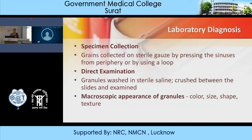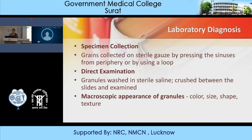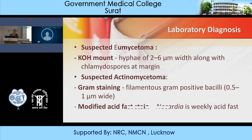For laboratory diagnosis, specimen collection involves collecting grains on a sterile gauze piece by pressing the sinuses from the periphery or using a loop. For direct examination, granules should be washed in sterile saline, crushed between slides, and examined. The macroscopic appearance of the granules should be checked for color, size, shape, and texture. After crushing, you proceed with KOH mount, Gram staining, or modified acid-fast staining.